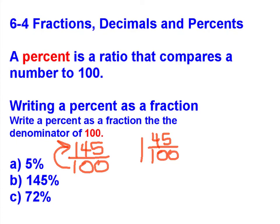So let's reduce that fraction. 45 and 100 can both be divided by 5. So that would give me 1 and 9 twentieths. Copy this problem down into your notes, and then try letter C on your own.